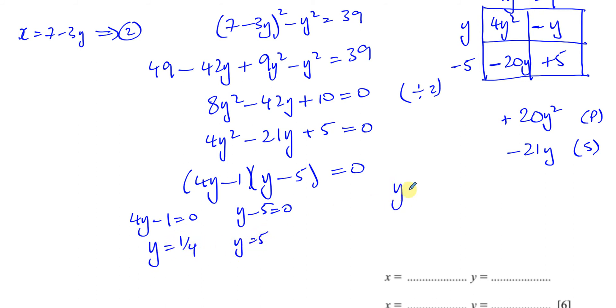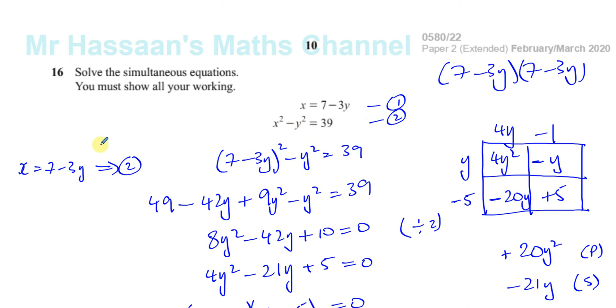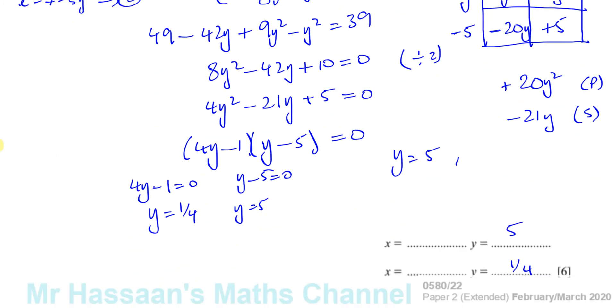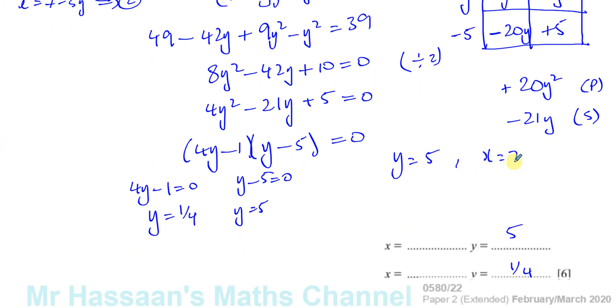Now, when Y is equal to, let's put 5 first and a quarter second. So when Y is equal to 5, let's choose 5 first. Then we know from up here that X is equal to 7 minus 3Y. So X is equal to 7 minus 3 times 5, which is equal to 7 minus 15, which is equal to negative 8.